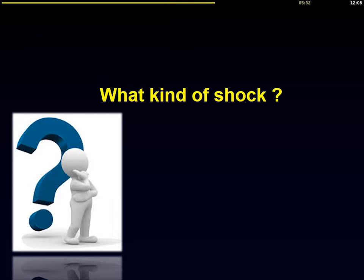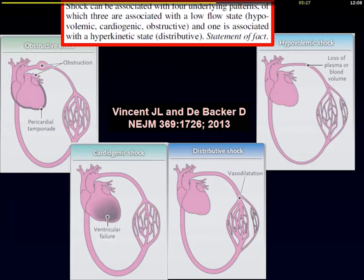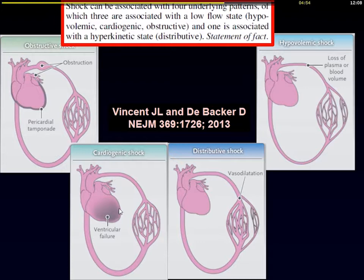Once we know a patient is in shock, the question is what kind of shock it is. There are four types: obstructive shock, hypovolemic shock, distributive shock, and cardiogenic shock. In the emergency department, hypovolemic shock may be relatively frequent, but in the ICU the most common type is distributive shock followed by cardiogenic shock. The other types are present but less common.